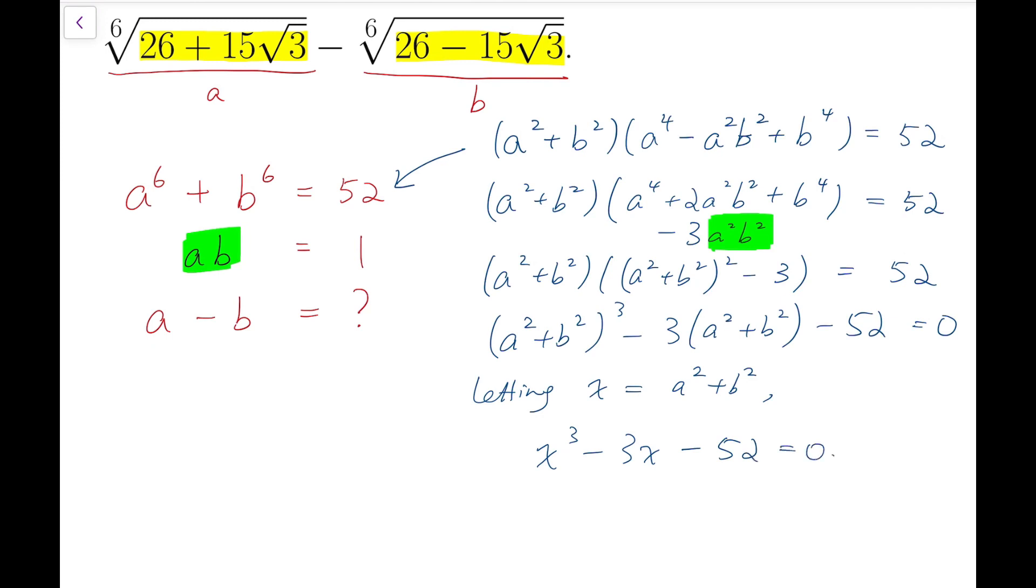Now to solve cubic equations, we can try some numbers and try to guess some factors. By putting x equals 4, you will get 0. So by factor theorem, I can say that x - 4 is a factor. In fact, 4³ - 3(4) - 52 = 0. So (x - 4)(x² + 4x + 13) = 0.